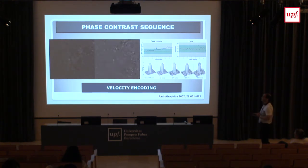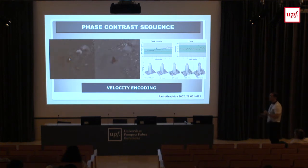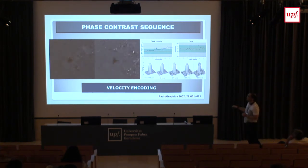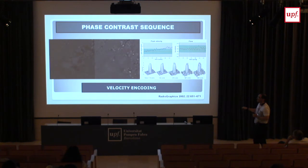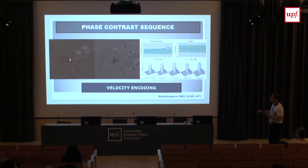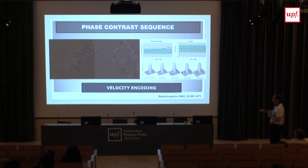One characteristic of phase contrast sequences is that we have to previously select the maximum velocity expected at that specific point. For example, in a patient with aortic stenosis the aortic valve orifice is reduced. If we select a velocity below the patient's actual maximum velocity, we see that there is black flow but in the middle there is white flow — this means the velocity we selected is incorrect. We have to increase the velocity encoding to make sure we are depicting the appropriate velocity and eliminate aliasing.